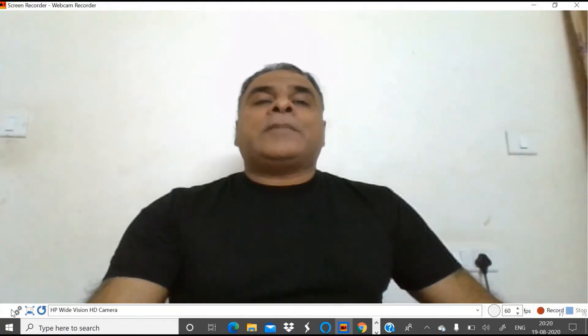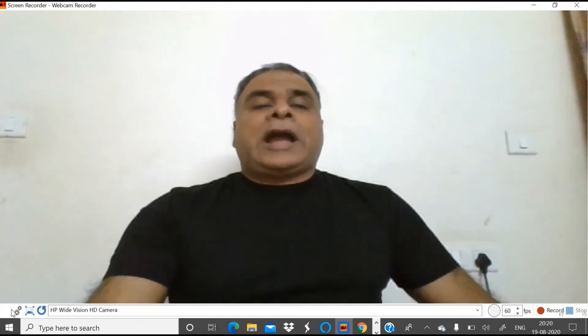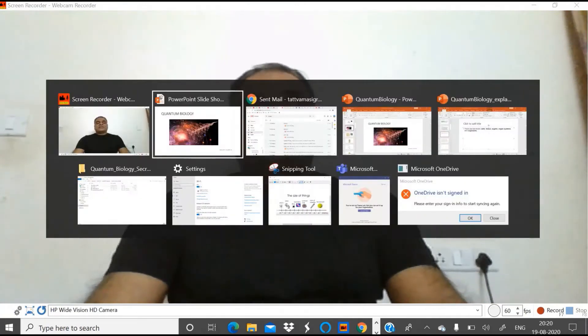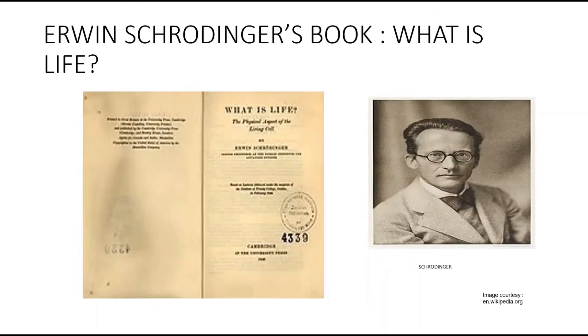To understand quantum biology much better, I am going to discuss Erwin Schrödinger's most famous book, What is Life? This book was written in 1950. Nobel laureate Erwin Schrödinger's What is Life? is one of the great science classics of the 20th century. It was written for the layman but proved to be one of the spurs to the birth of molecular biology and the subsequent discovery of DNA.